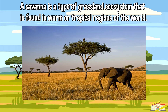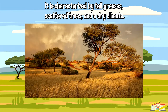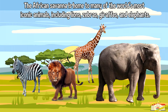A savannah is a type of grassland ecosystem that is found in warm or tropical regions of the world. It is characterized by tall grasses, scattered trees, and a dry climate.